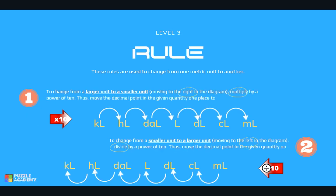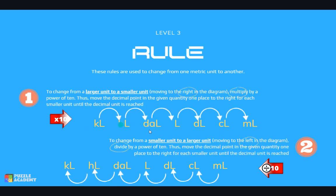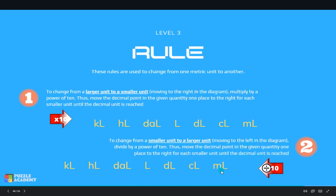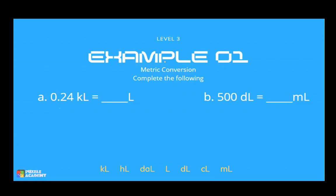Dito sa topic na volume and capacity, same rule lang din naman ang gagamitin natin. So, kung ang conversion nyo ay papunta sa right, then magmumulan tayo ng decimal point papunta sa right, o kaya naman magmultiply tayo ng 10. On the other hand, kapag papunta naman sa left, nagdi-divide tayo ng 10, o kaya yung decimal point ay minumove natin depende sa gaano karaming beses nagmove. For our first example, magko-convert tayo ng mga measurement to another measurement.